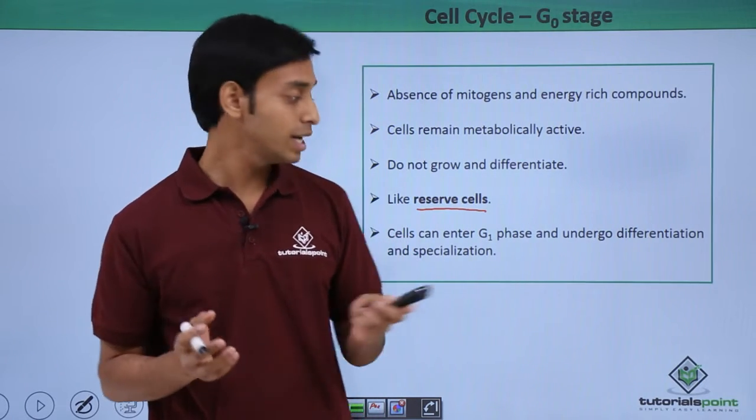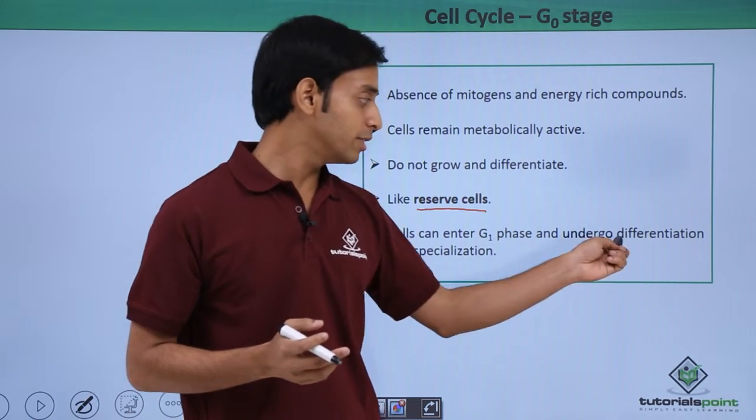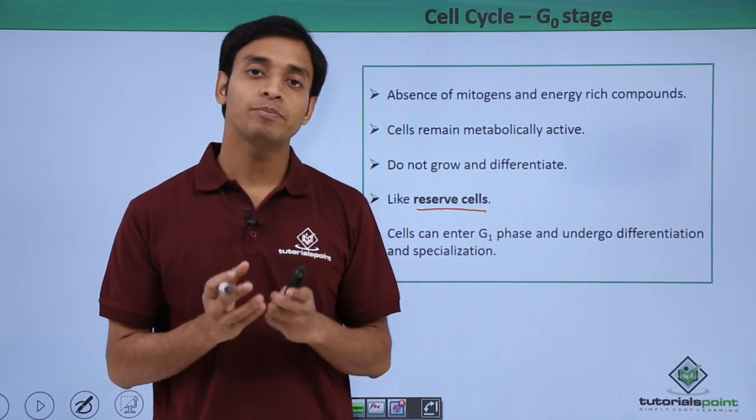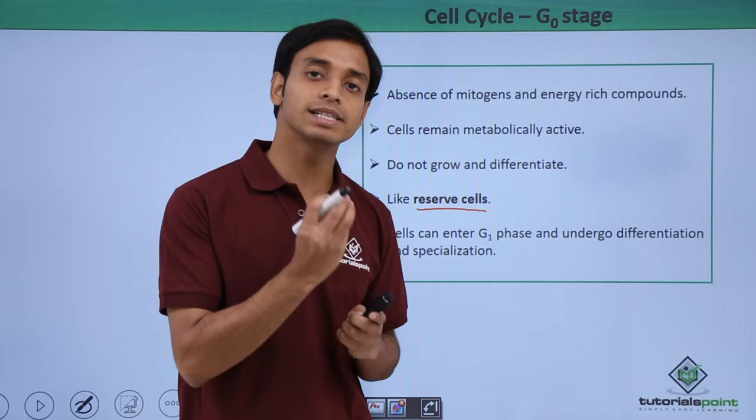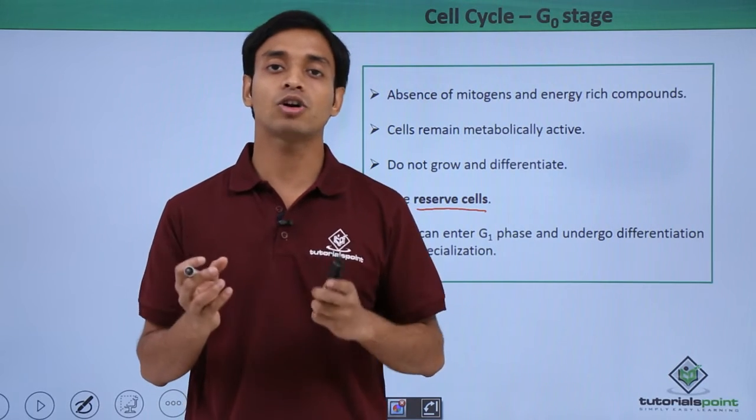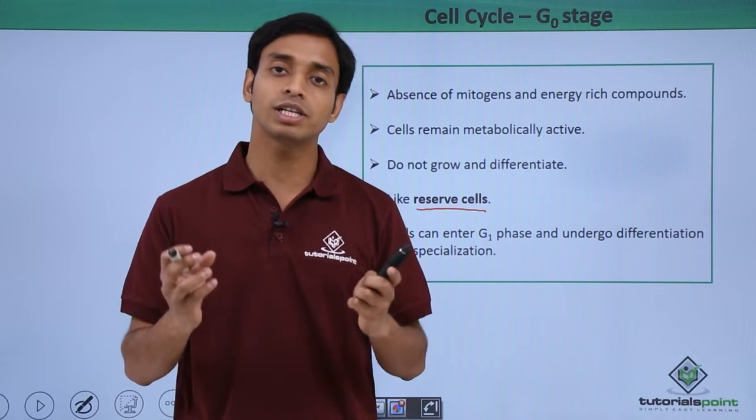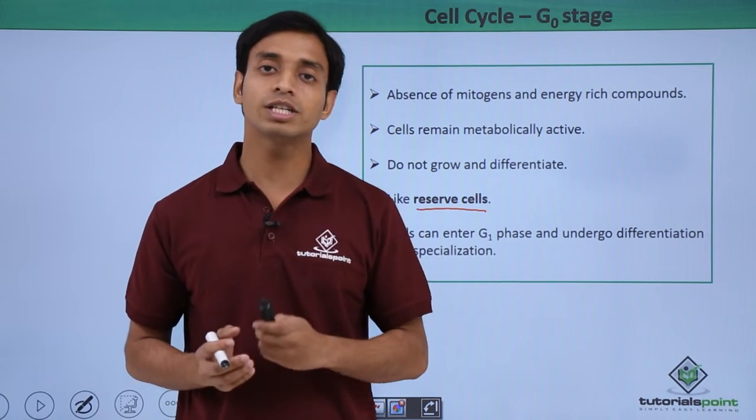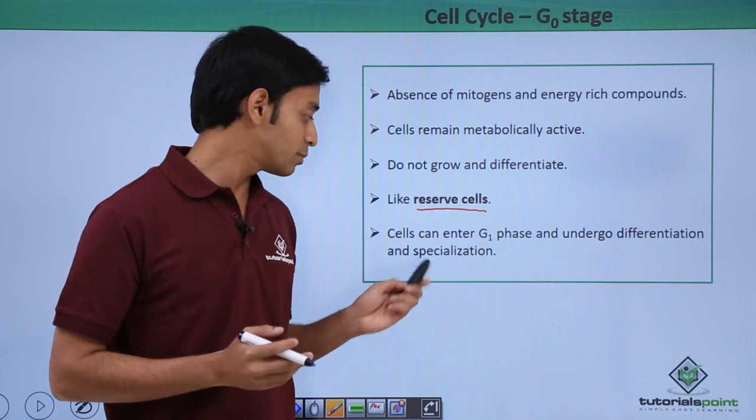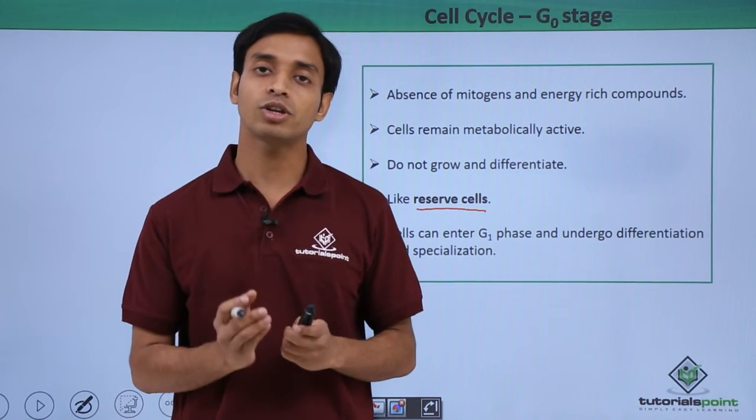They can differentiate and also specialize. Differentiation means that from a single cell, it can form different cells belonging to different body parts—different types of cells with different functions. Cell specialization means only formation of a specific type of cell. These reserve cells, when needed, can transform into different cells of different parts of the body.